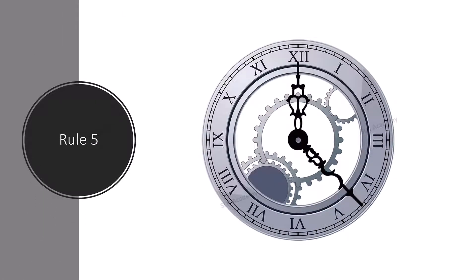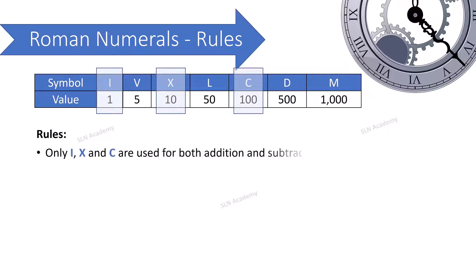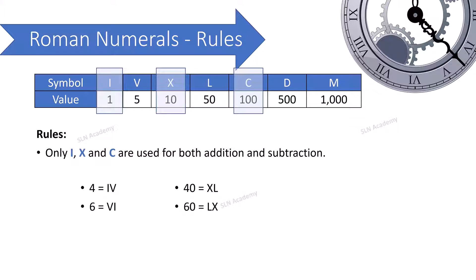Rule number five: Only I, X, and C are used for both addition and subtraction. For example: 4 = 5 − 1, so I is used for subtraction; 6 = 5 + 1, so I is used for addition. 40 = 50 − 10, so X is used for subtraction; 60 = 50 + 10, so X is used for addition. 400 = 500 − 100, so C is used for subtraction; 600 = 500 + 100, so C is used for addition.